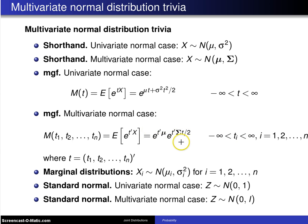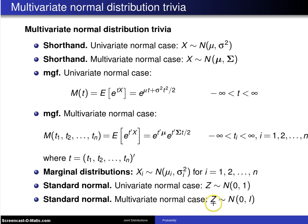You can see that even the moment generating function generalizes nicely. For marginal distributions, just like in the bivariate normal case, the marginal distributions for each x sub i are normally distributed with mean mu sub i and variance sigma sub i squared, for i equals 1 to n. For the standard normal: in the univariate case, z is normally distributed with mean 0 and variance 1. In the multivariate normal case, the standard multivariate normal distribution is a vector z with mean vector 0 and variance-covariance matrix I, where I is the n by n identity matrix.